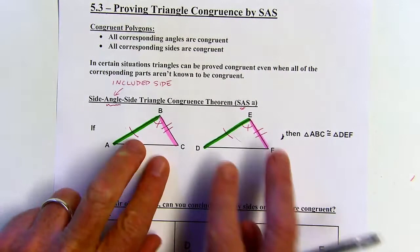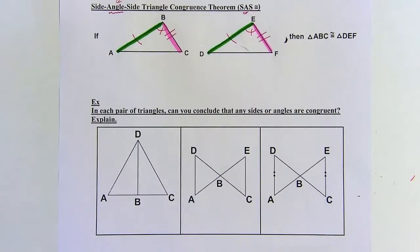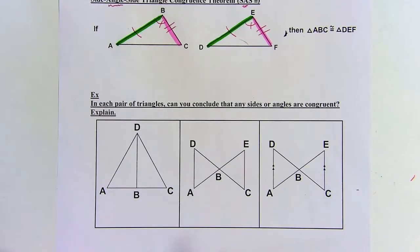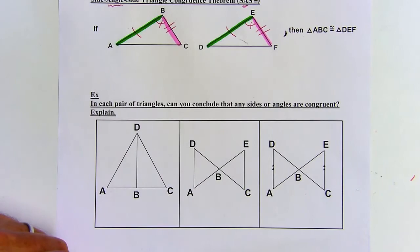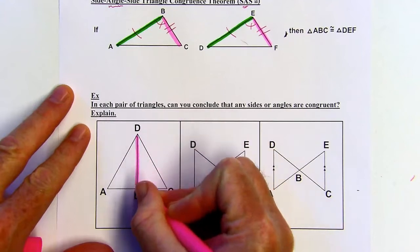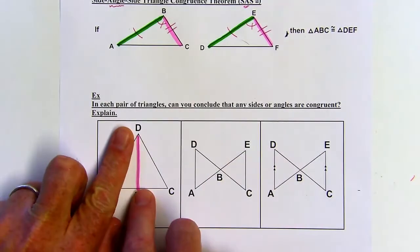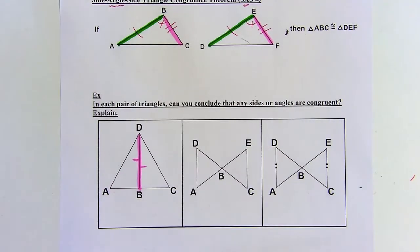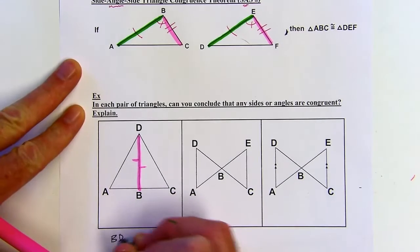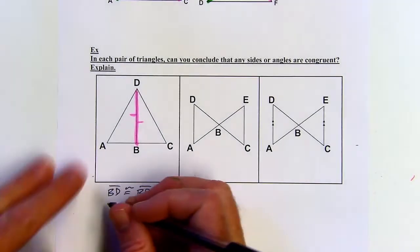So if you've got two pairs of sides and an included angle, that means the whole triangles are congruent. Another concept that's really important: sometimes we're looking at two triangles and it doesn't seem like we have enough information, but sometimes there are hidden sides or angles that you can find congruent. This line segment BD is in both triangles — it's the right side of the left triangle and the left side of the right triangle — so I can say it's congruent to itself. That's called the reflexive property of congruence.